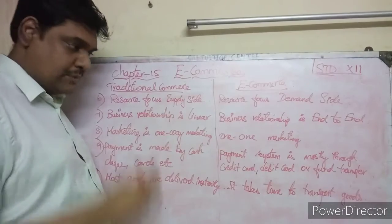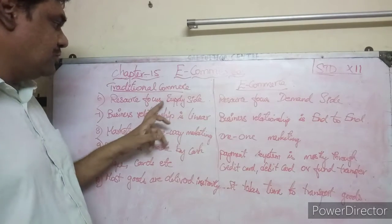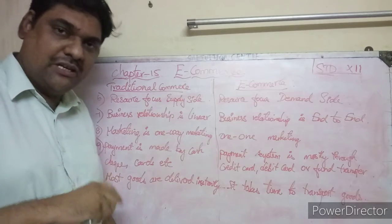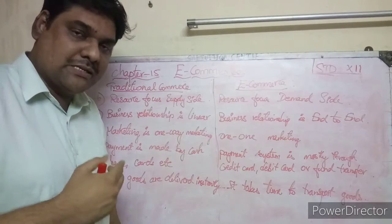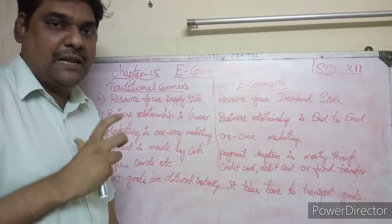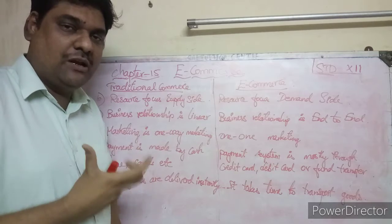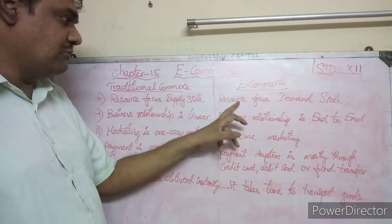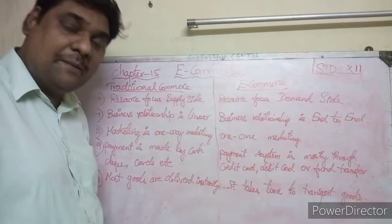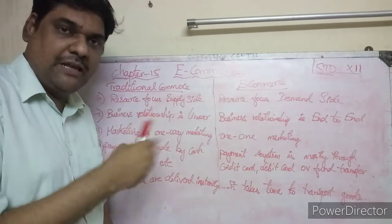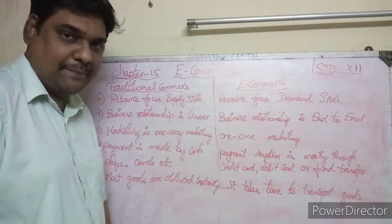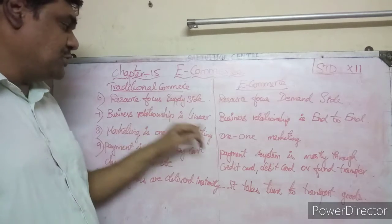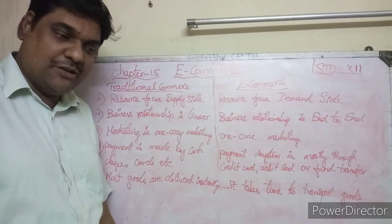The sixth difference is resource focus. In traditional commerce, suppliers are given the main importance — suppliers have full control and power. But in e-commerce, the focus is on the demand side; customers and their voice are very important in the business.